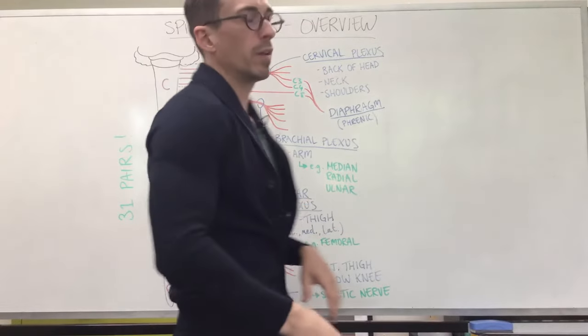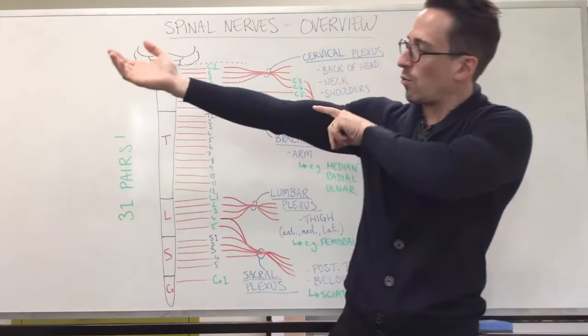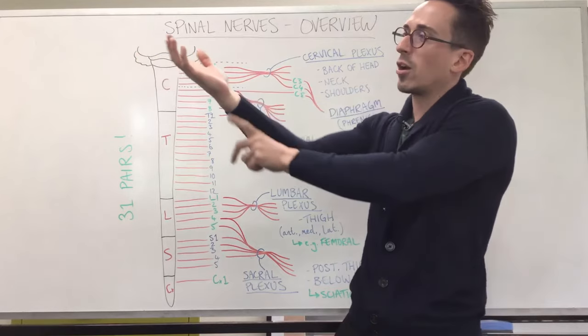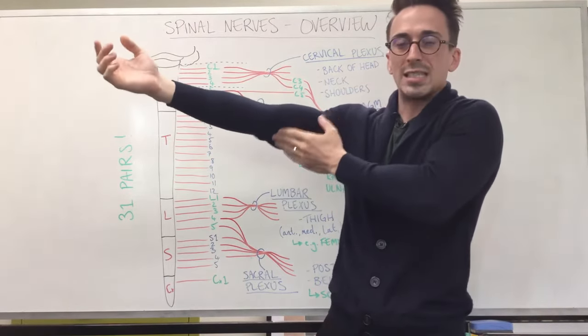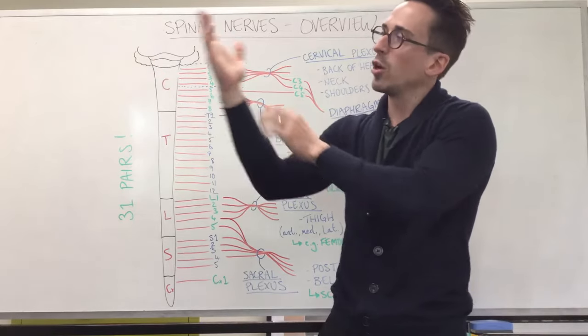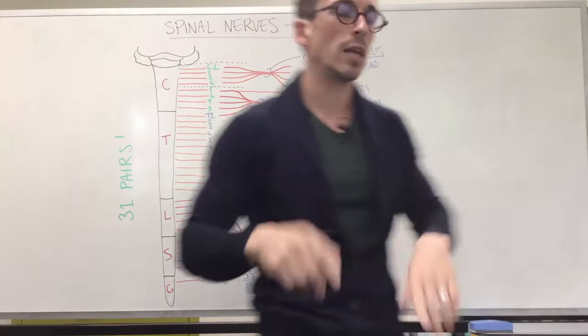And then the ulnar nerve, the ulnar nerve has this arcuous journey around the elbow and goes and innervates that pinky finger. And therefore, when you stimulate here, what we term the funny bone, we get that tingling in the finger. That's because of the ulnar nerve.